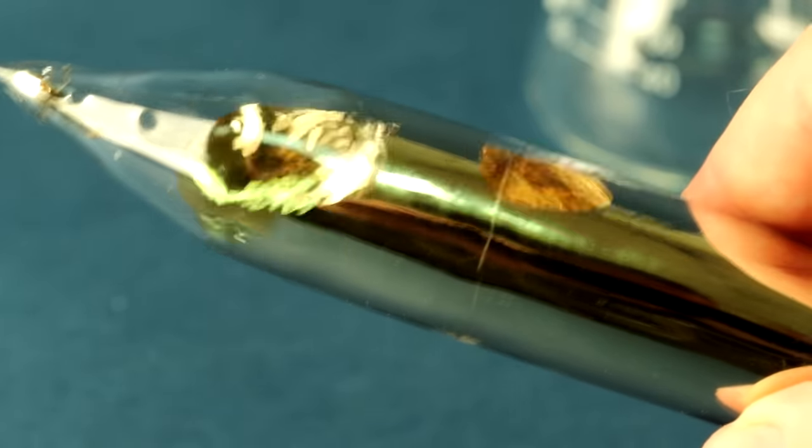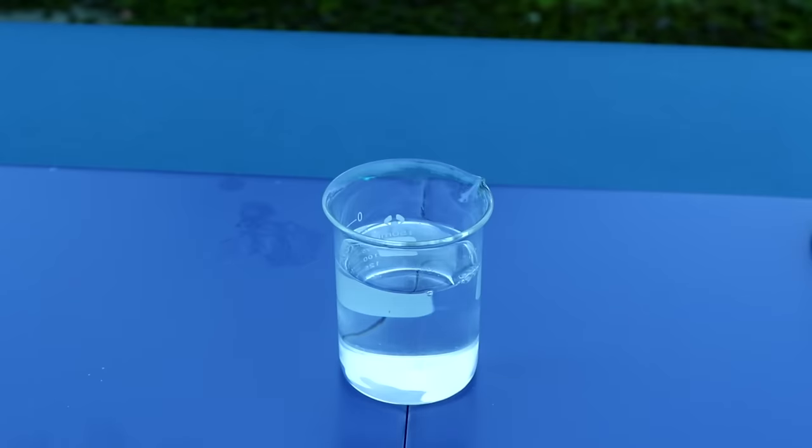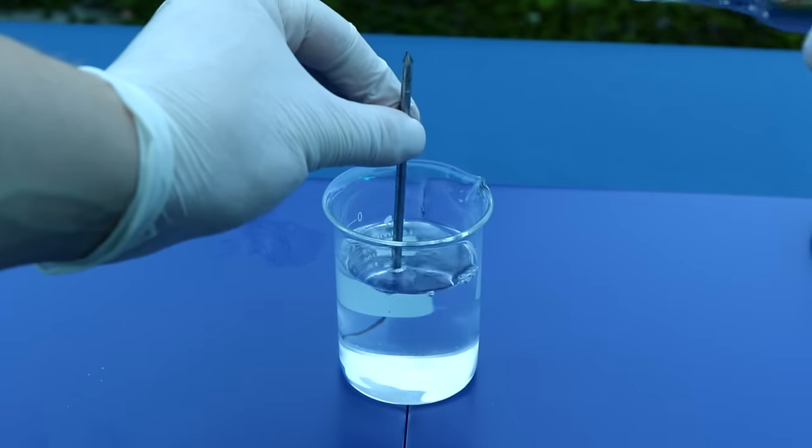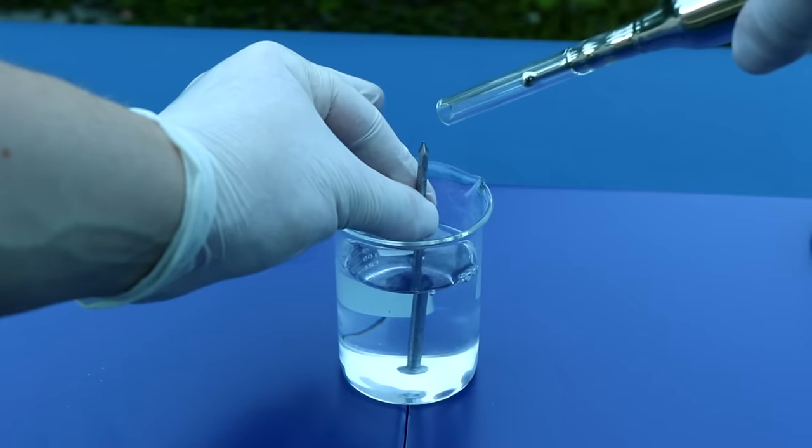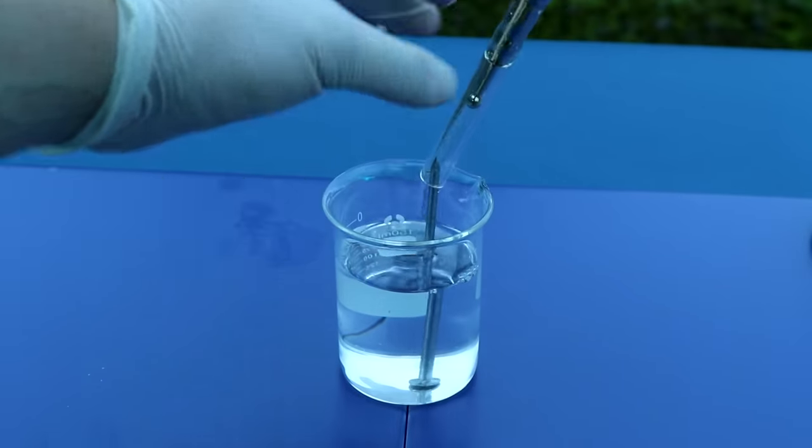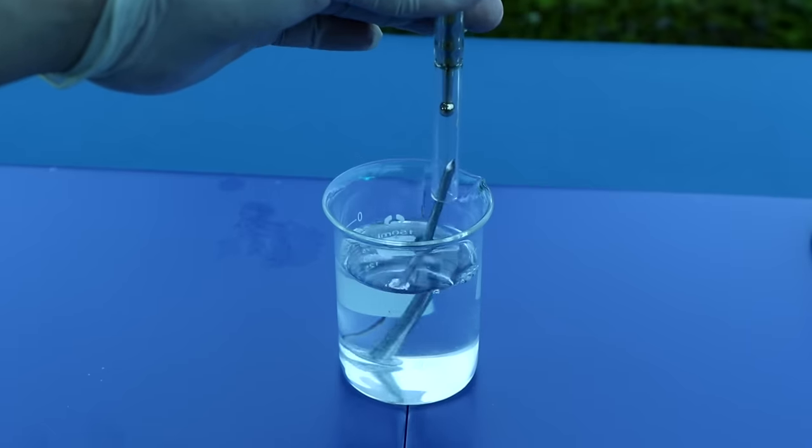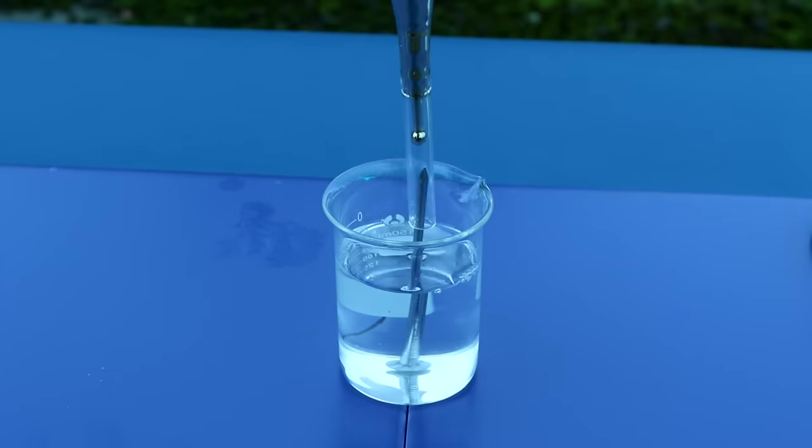Now, let's proceed to the most interesting part, conducting experiments with cesium. First, to get the cesium out of the vial, I decided to melt it in the vial and then pour out the liquid cesium in kerosene.